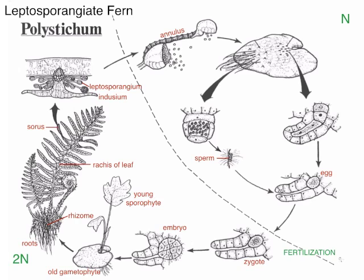If we look closely at one of these leptosporangia, we can see that in Polystichum and many other ferns there's an annulus on one side. That annulus consists of cells that are very thick-walled on most sides but thin-walled on another side. As they dry, the water inside pulls back, making the thin-walled places shrink and causing the thick-walled places to be under strain. At some point that water column will break, and it'll catapult the spores out.